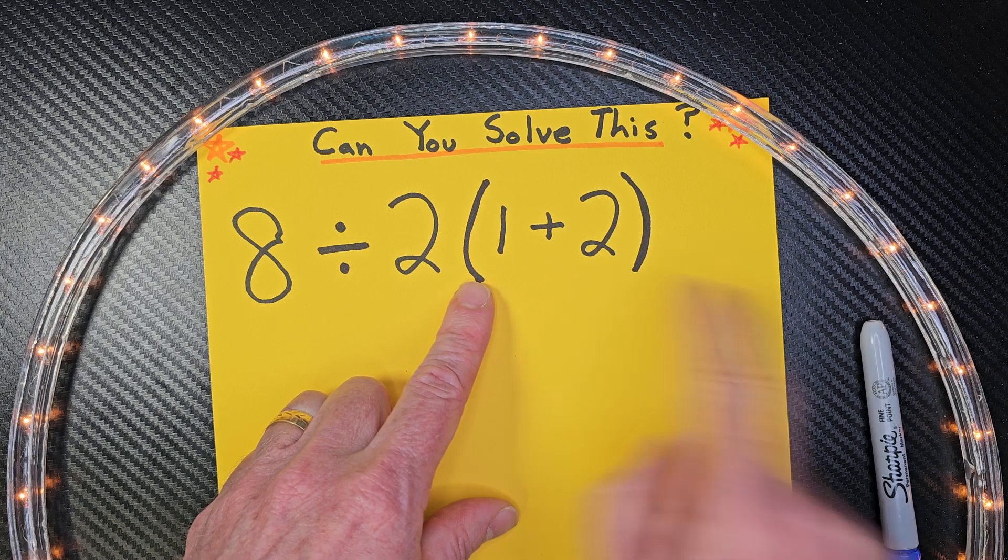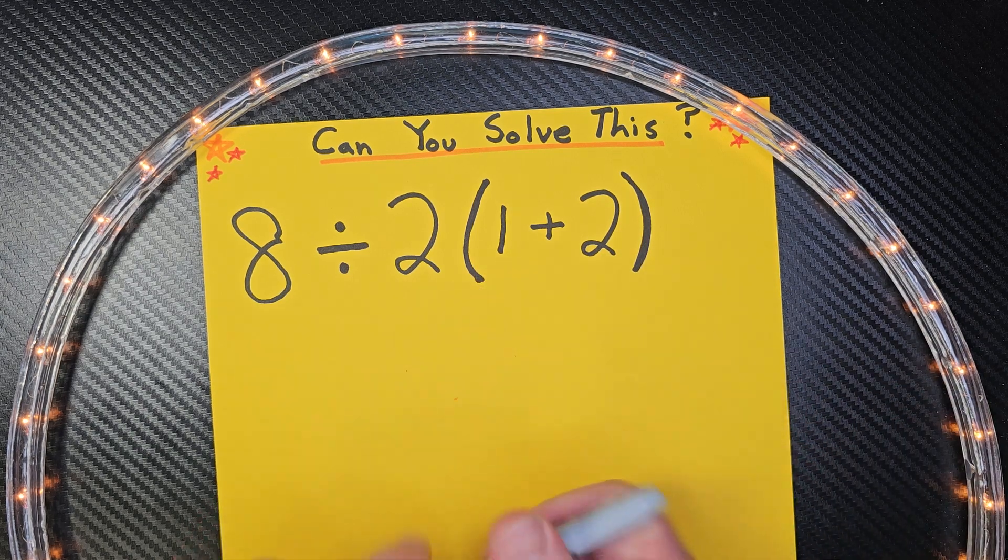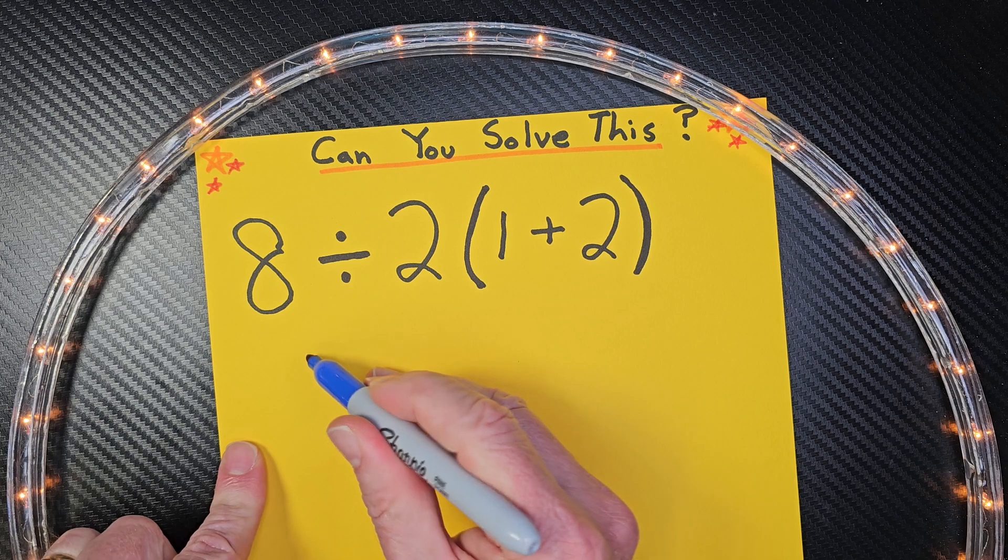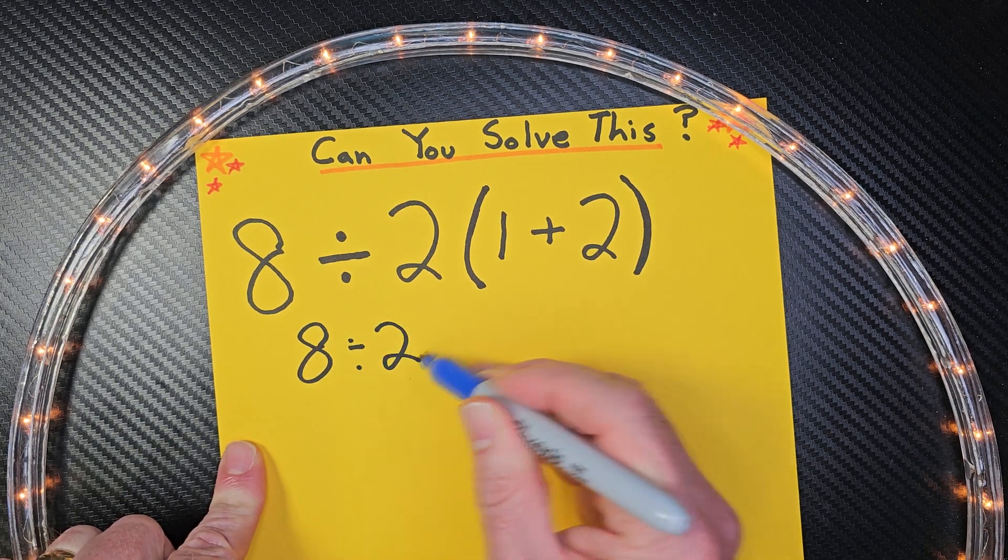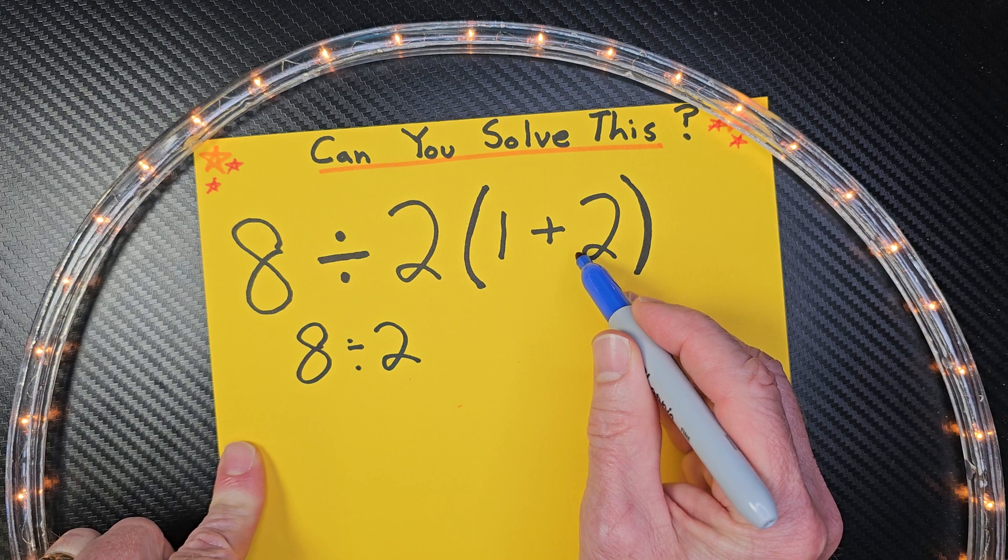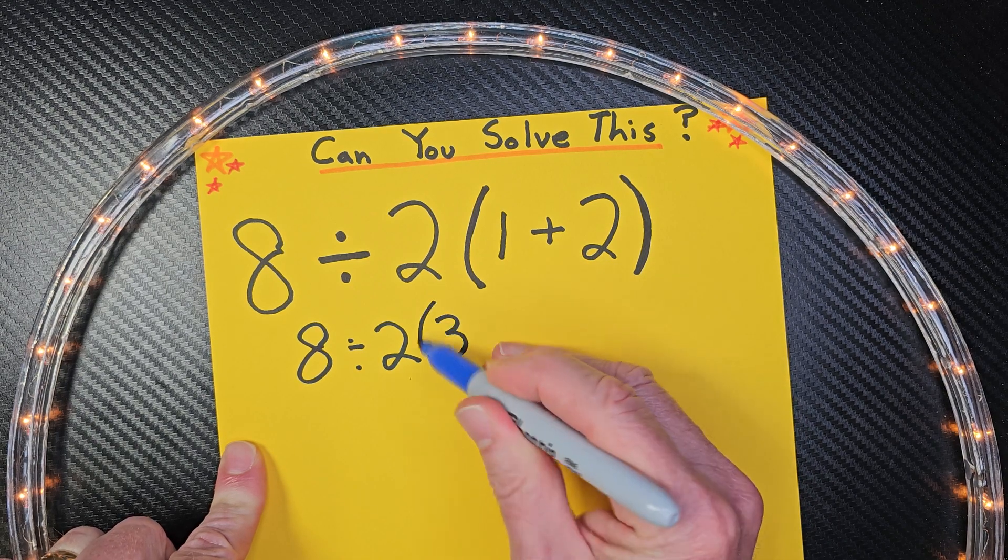So we need to go ahead and add 1 plus 2. So I'm going to go ahead and rewrite this problem: 8 divided by 2, and then 1 plus 2 equals 3. All right, so I go ahead and put my parentheses right here.